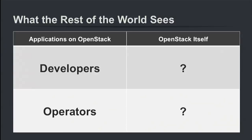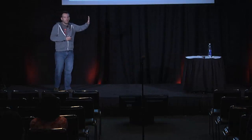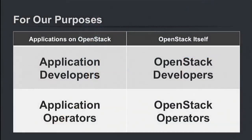What does the rest of the world see when they look at OpenStack? When people in mainstream software development think about developers and operators, they think about applications — the people who build software as a service, mobile applications. Those are the developers; the people who deploy those things are the operators. They don't necessarily even see OpenStack; it's infrastructure as a service, a black box you use via an API. We need to delineate these two sides of the same coin.